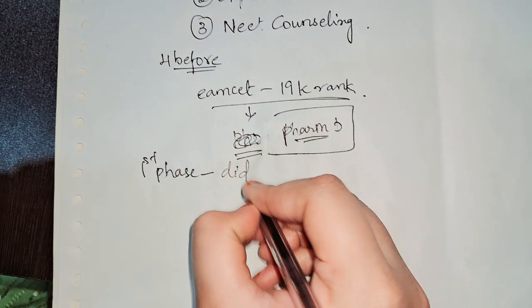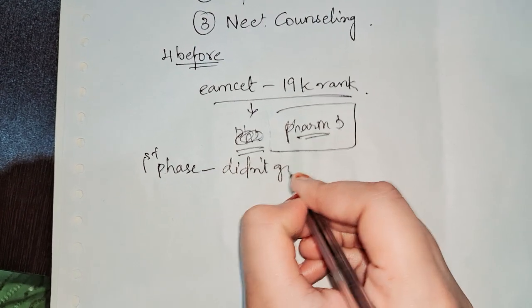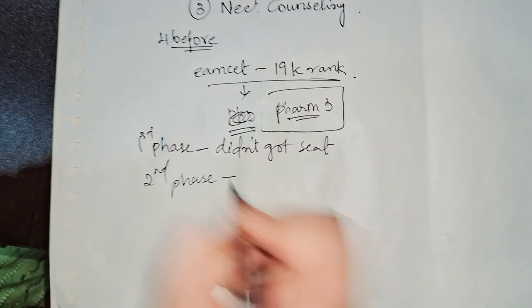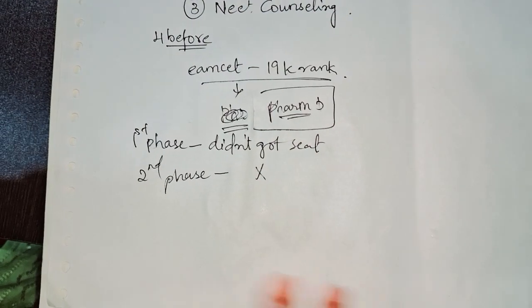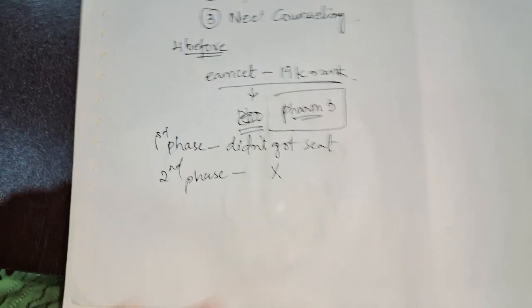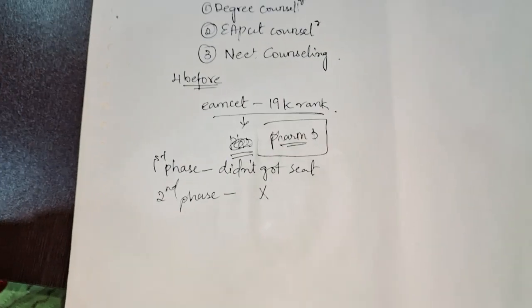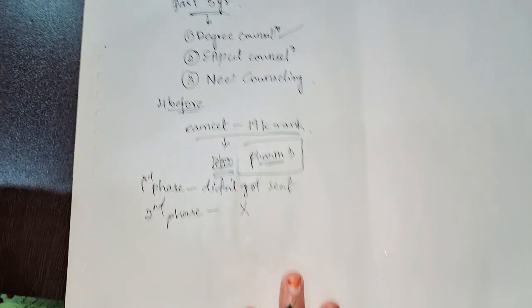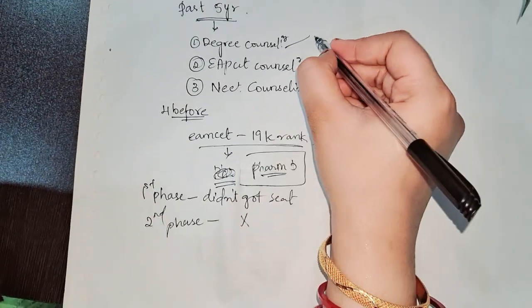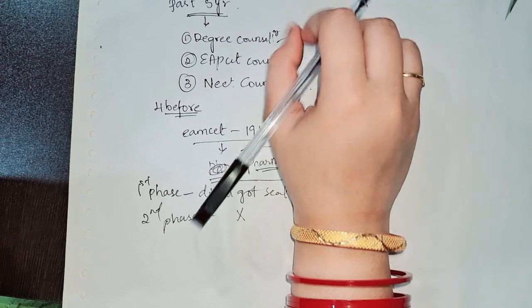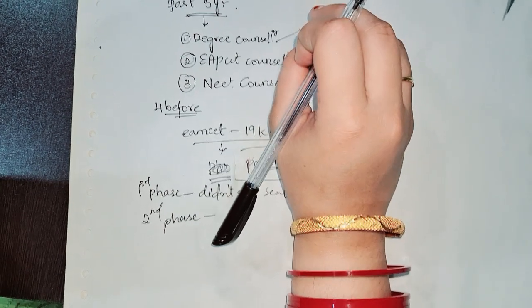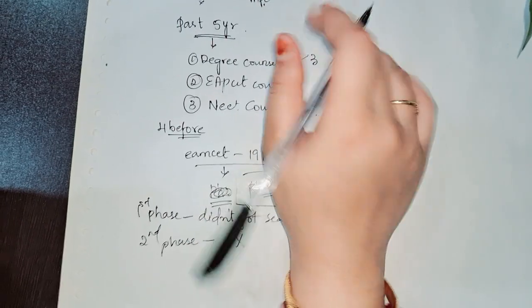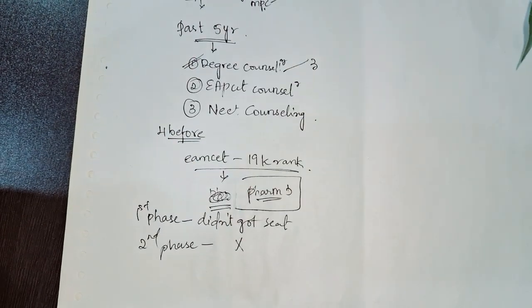She didn't get a seat, and in the second phase she applied for B Pharmacy along with PharmD, but still she didn't get the seat. She felt exhausted, tired, and got into depression because degree counseling was already finished. There were three phases at that time when she wrote the NEET, that was the first or second year of introducing of degree counseling.